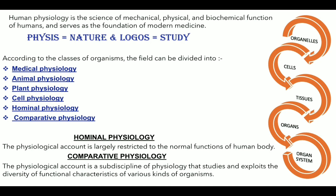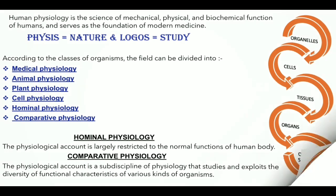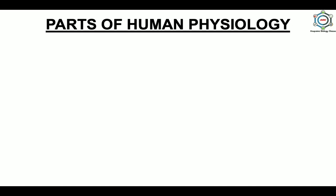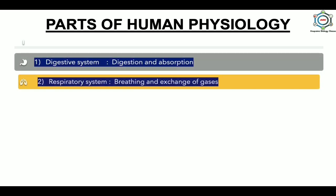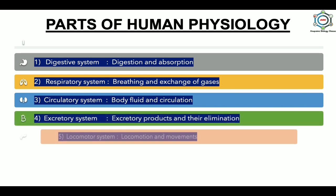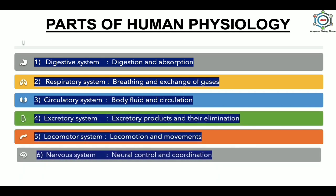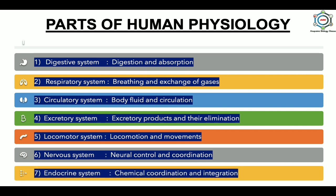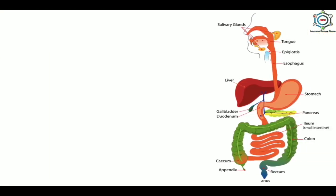Now, parts of human physiology. Human physiology is divided into different parts: first is the digestive system, second is the respiratory system, third is the circulatory system, fourth is the excretory system, fifth is the locomotor system, sixth is the nervous system, and seventh is the endocrine system. We will discuss all these topics in short.